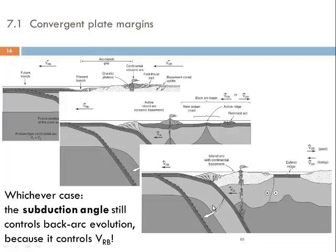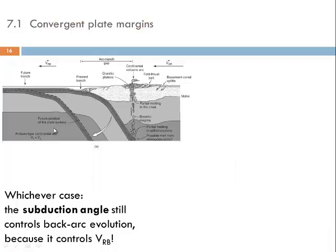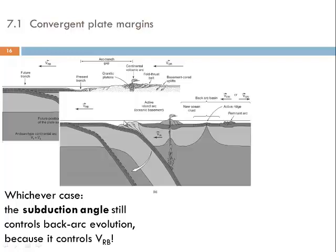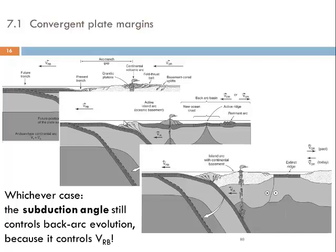In this series of sketches we can see again the different scenarios that result from different subduction angles. Unfortunately in the van der Pluijm and Marshak textbook these different subduction angles are not properly illustrated within each of the sketches. The Andean situation should actually show a shallower subduction angle than in the island arc or Japanese situation.